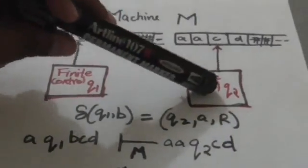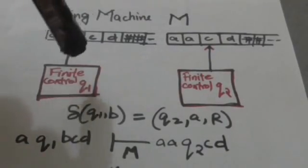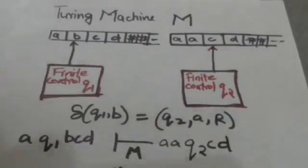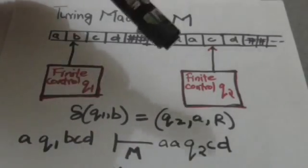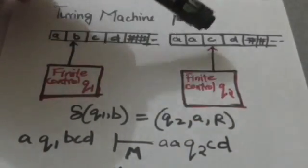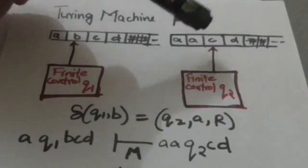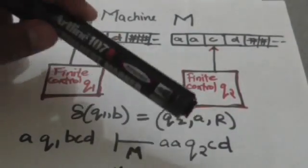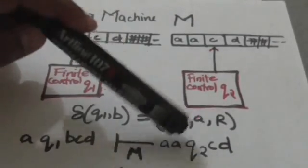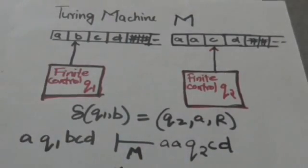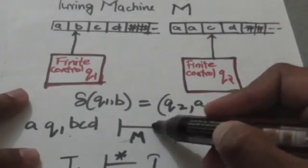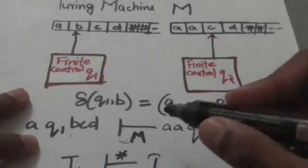After this transition, the Turing machine M will come into a new configuration, which can be described by a new instantaneous description. These two instantaneous descriptions can be related by a symbol, because the Turing machine M has reached this new configuration from the previous configuration in only one move.